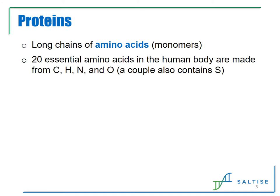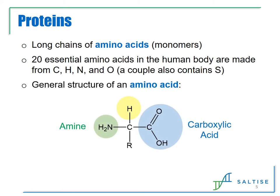We will first look at proteins. They are long chains made up of monomers called amino acids. In the human body, there are 20 essential amino acids that contain carbon, hydrogen, nitrogen, and oxygen atoms. There are a couple of amino acids that also contain sulfur. The general structure of all amino acids includes an amine group as well as a carboxylic acid group, which together make up the name amino acid.